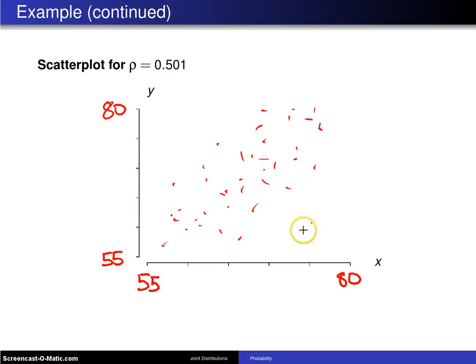What does that dot correspond to? That dot corresponds to a very, very tall father and a shorter son. You may get a dot out here, which is a shorter father and a very tall son.